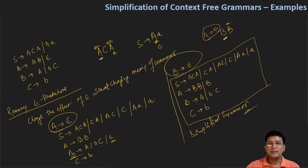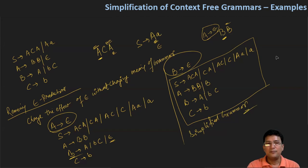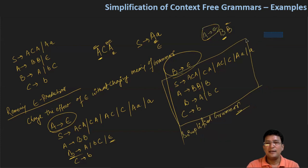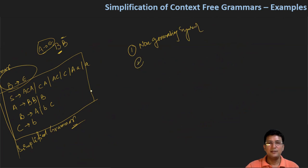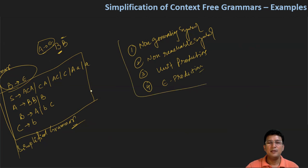Whenever we're asked about simplification of any grammar, we can say that simplification involves four steps. The first step is that we should eliminate the non-generating symbols. Then we should eliminate the non-reachable symbols. Then we should remove the unit productions. And finally, we should remove the epsilon productions. So after these four steps, whatever we remain with will be the simplified CFG.